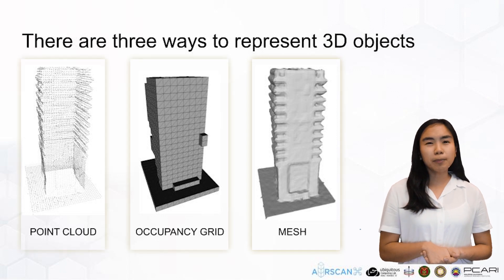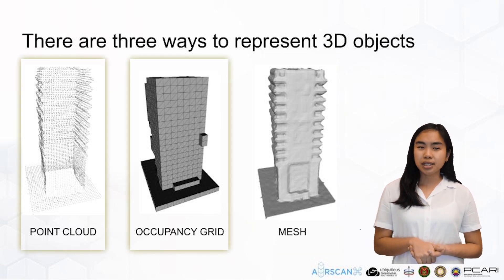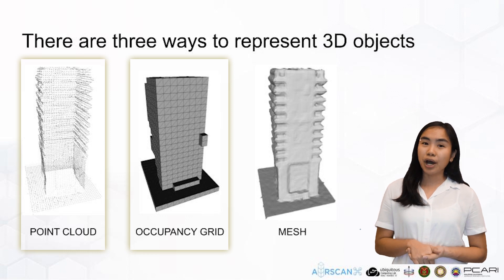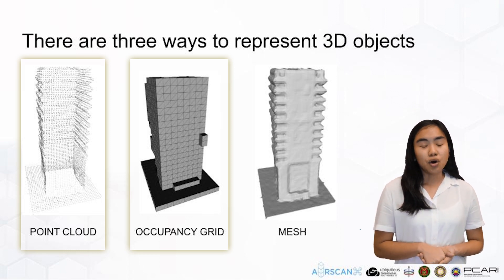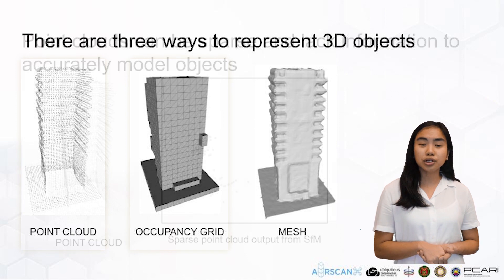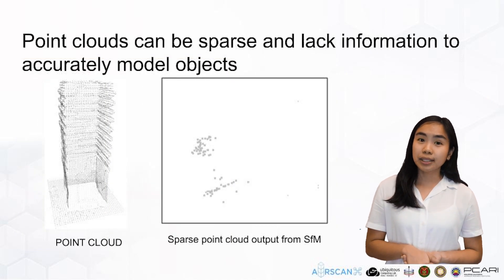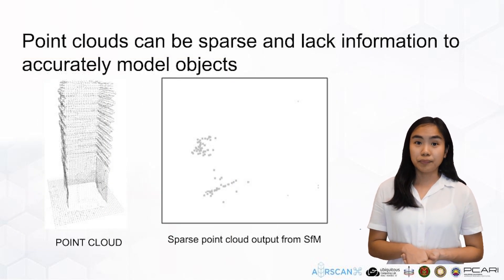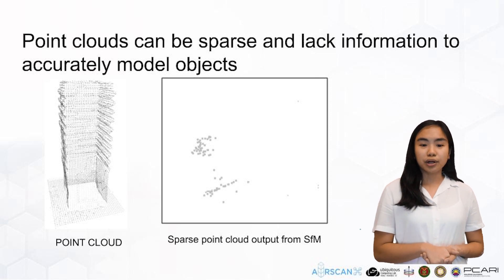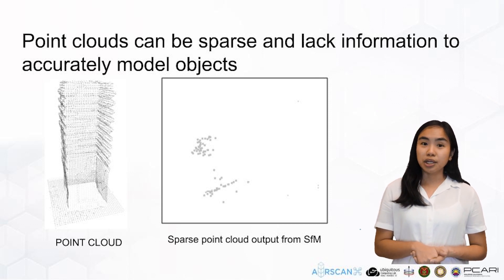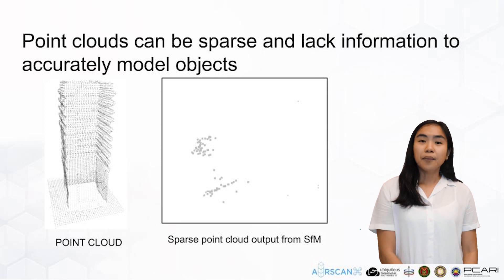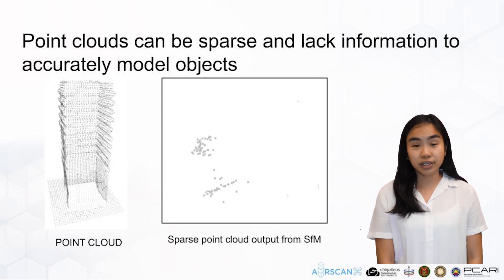However, the problem with point clouds and occupancy grids is that they can be sparse and can lack information to accurately model objects. When few images are given or available to reconstruct the 3D object, sparse point clouds can result from SFM. Despite existing works that try to overcome challenges in point cloud and occupancy grid representations, meshes can prove to be a lot more efficient.